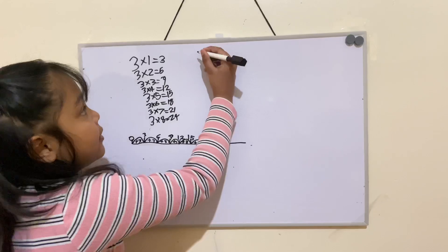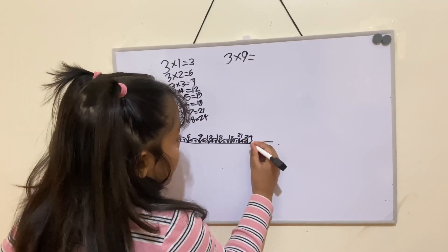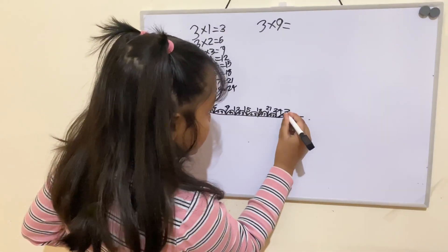3 times 9. You do another jump. Equals 27.